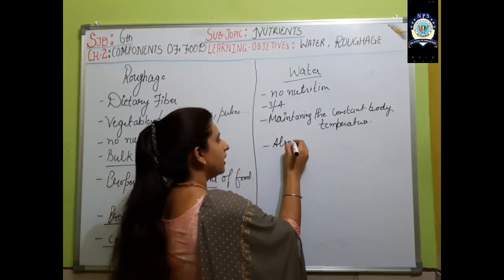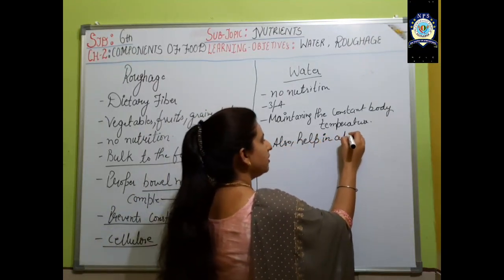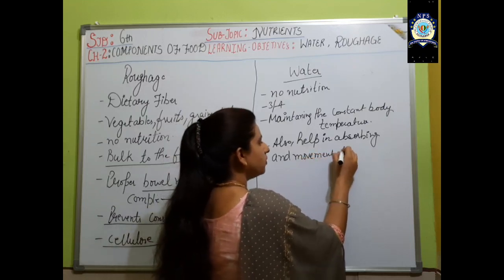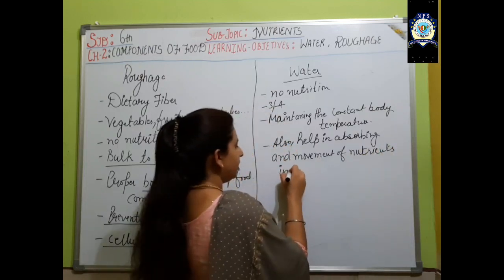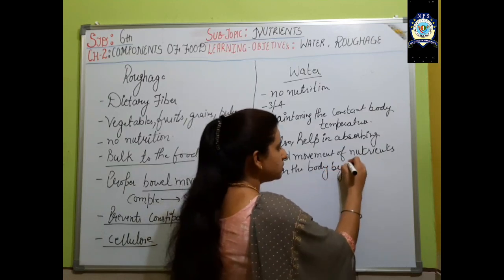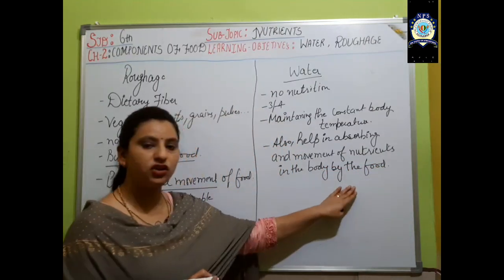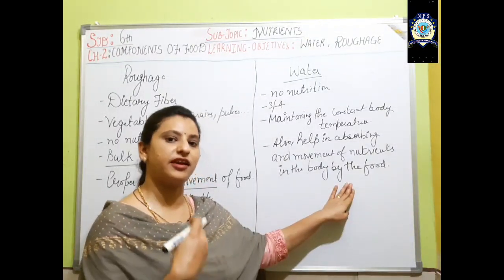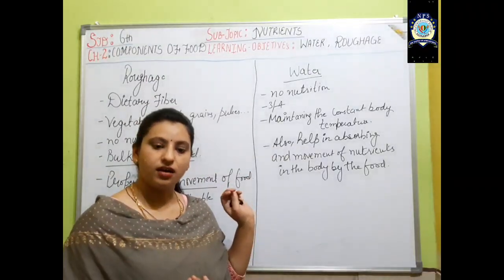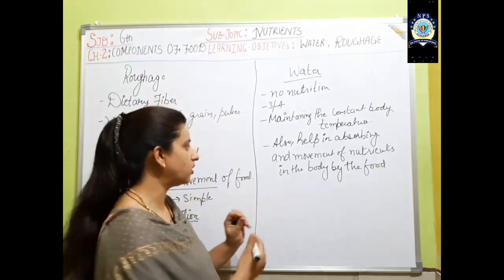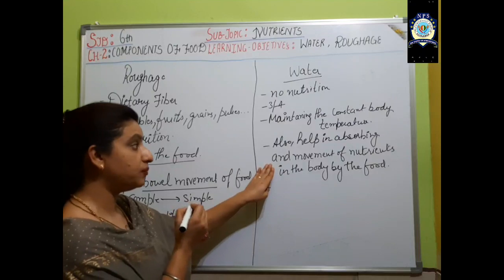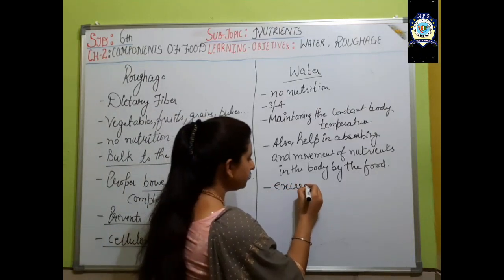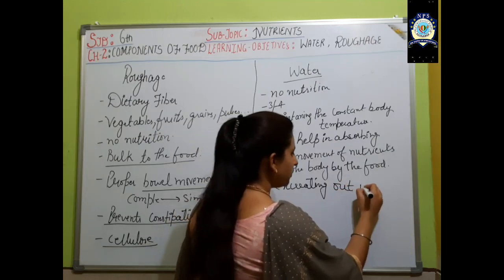Water also helps in absorbing and moving nutrients in the body from the food we eat. The diet we take contains nutrients, and to absorb and circulate those nutrients inside the body, water is very important. Water also helps in excreting waste from the body in the form of urine and sweat.